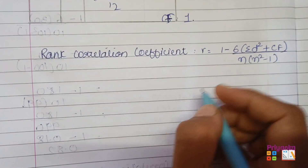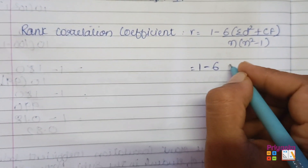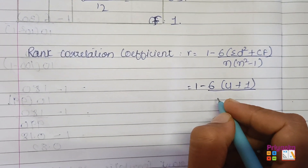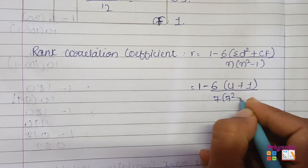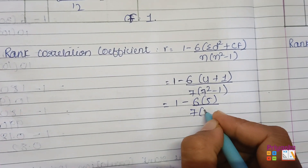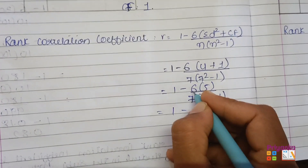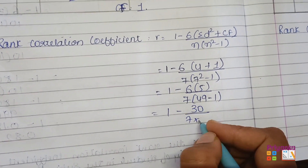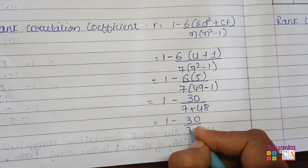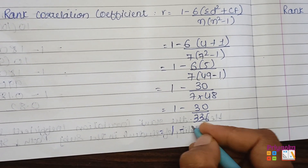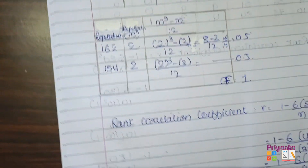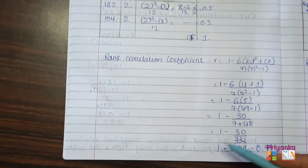Apply the modified formula: r = 1 − 6(ΣD² + CF) / (n(n²−1)), with n=7. That gives 1 − 6(4+1) / (7×(49−1)) = 1 − 6×5 / (7×48) = 1 − 30/336 = 1 − 0.09 = 0.91. Hence the rank correlation coefficient between the height of the husband and wife is 0.91.